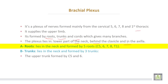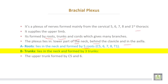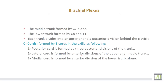The roots lie in the neck and are formed by 5 roots. The trunks lie in the neck also and are formed by 3 trunks. The upper trunk is formed by the 5th and 6th cervical nerves. The middle trunk is formed by the 7th cervical nerve alone, while the lower trunk is formed by the 8th and 1st thoracic nerve. Each trunk divides into anterior and posterior divisions behind the clavicle.